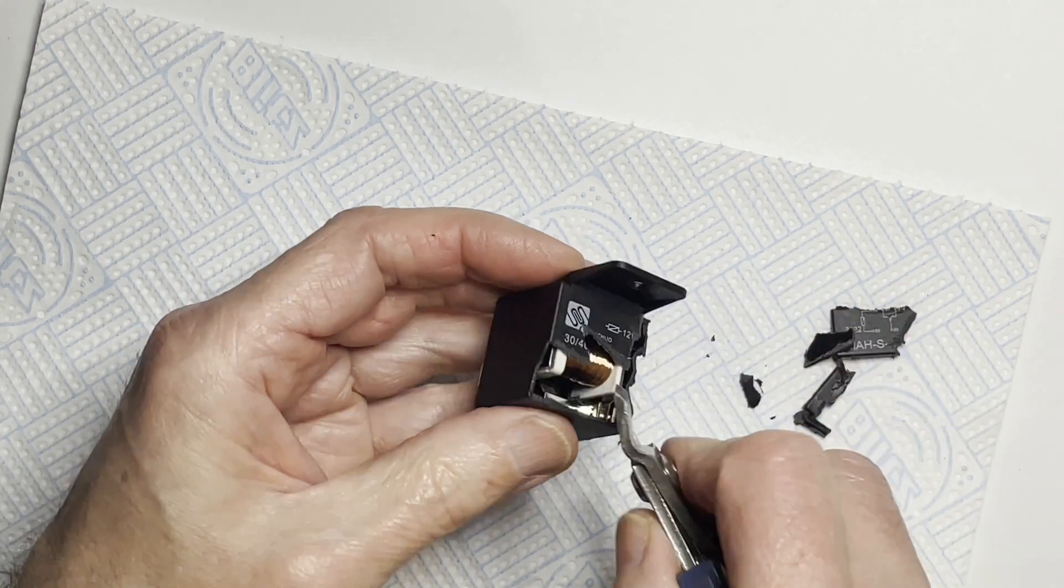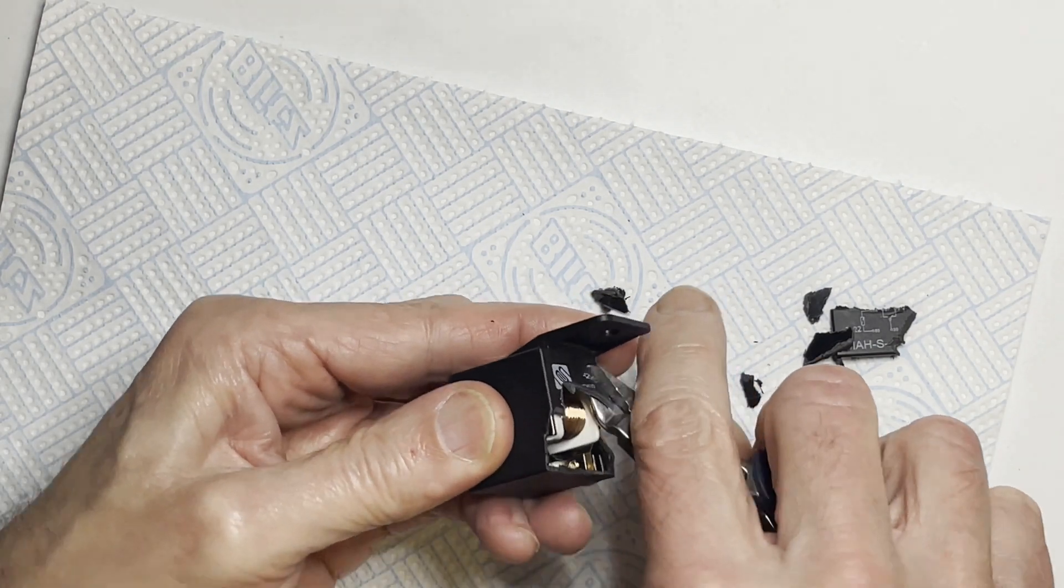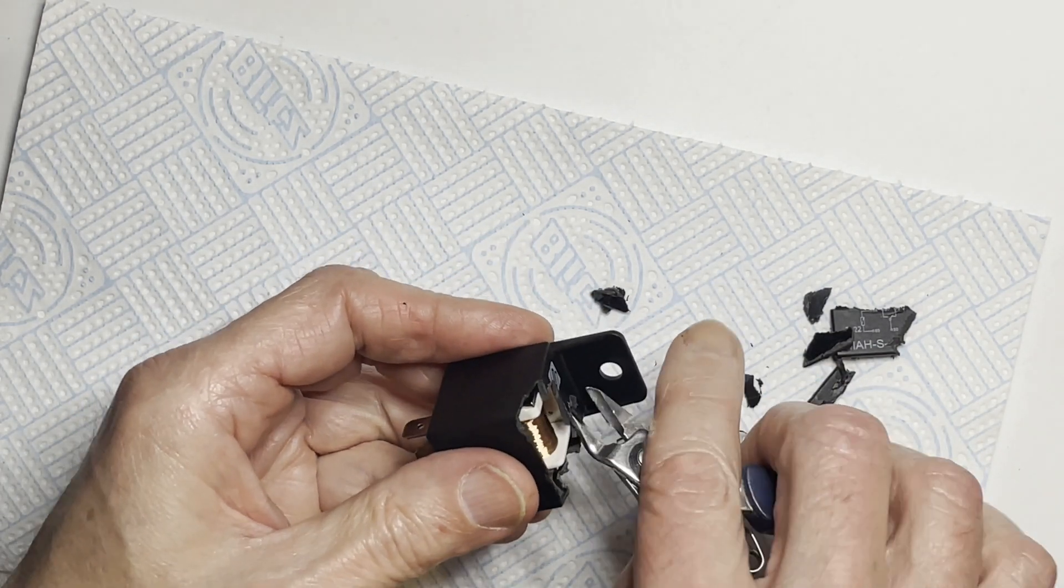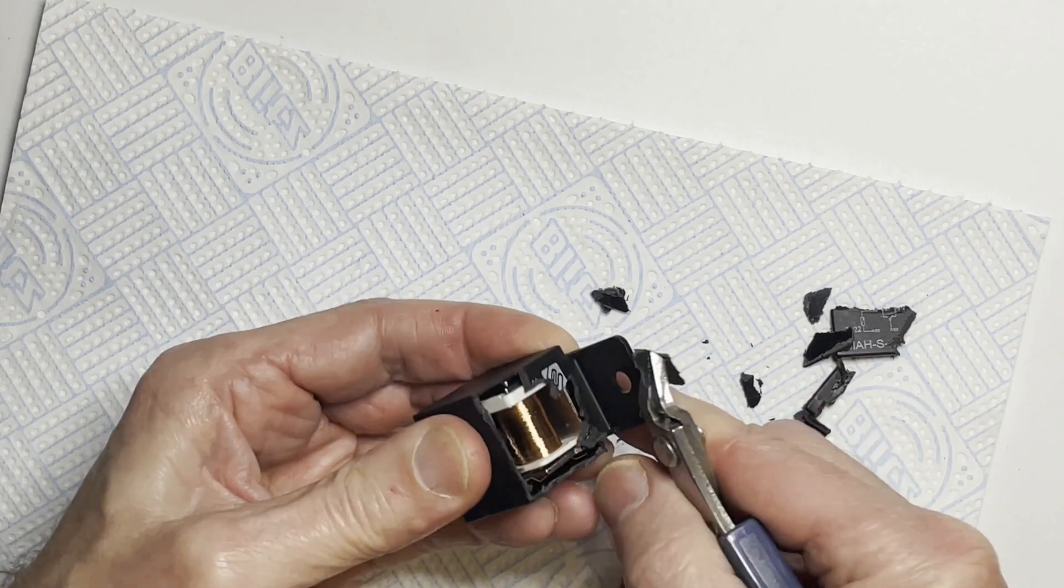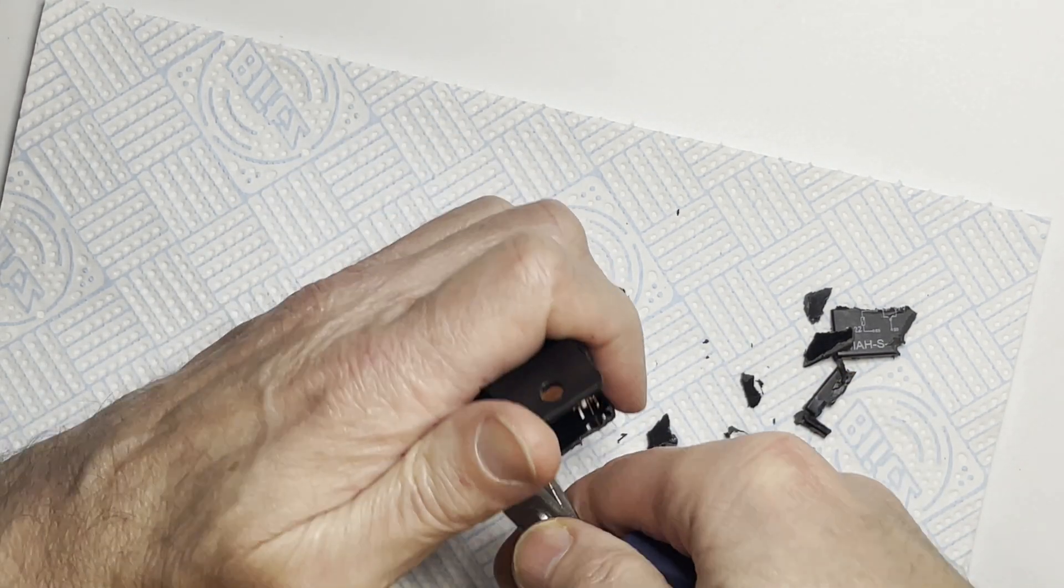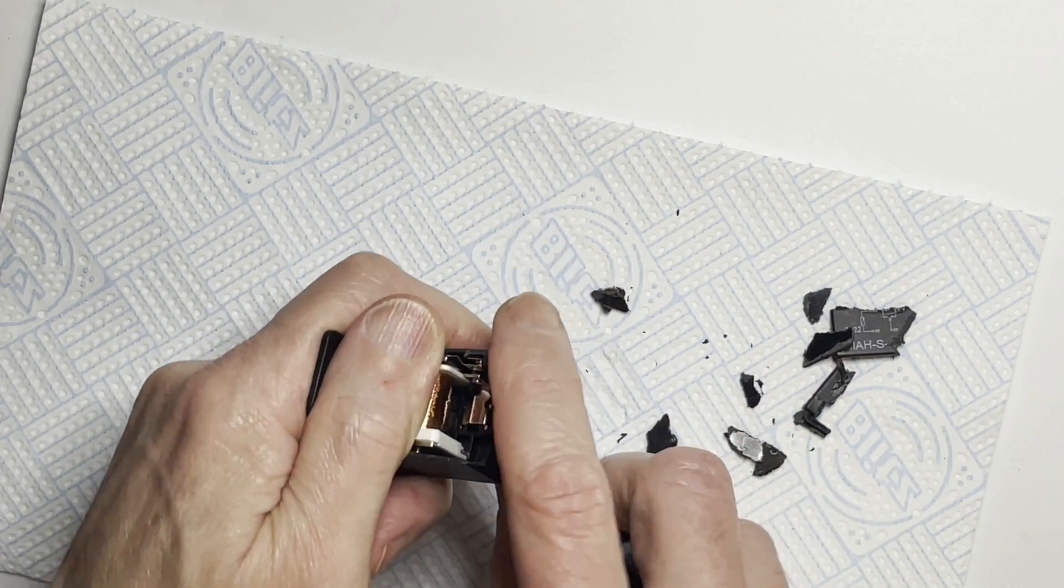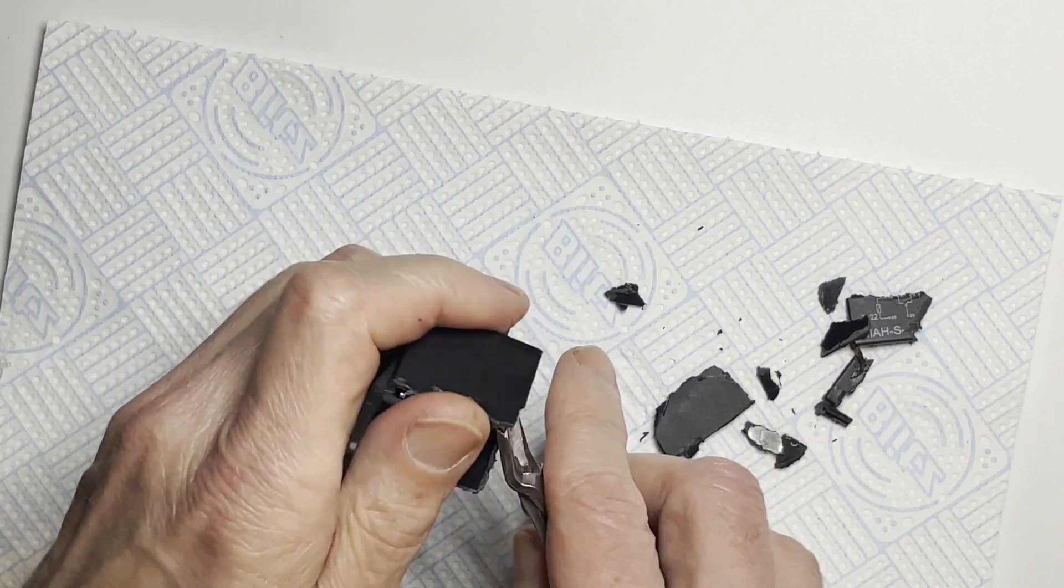Once you can see the coil it's a bit easier to work around. You can see where it's safe to chop into the thing and stick tools in. So basically now from the front edge of it I'm just going to tear the sides out and keep working the way downwards.